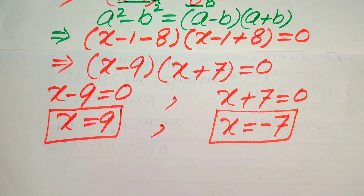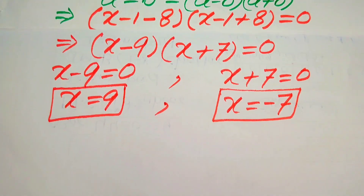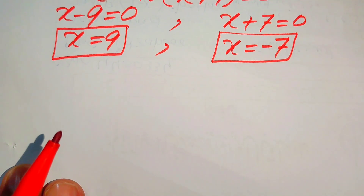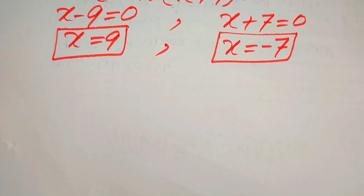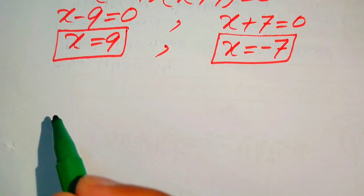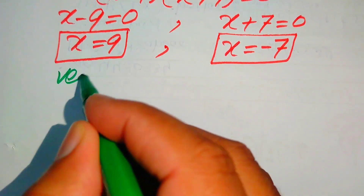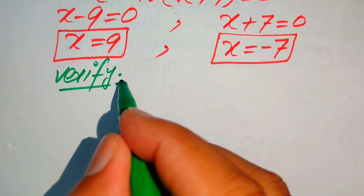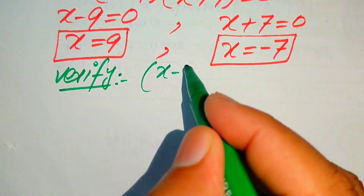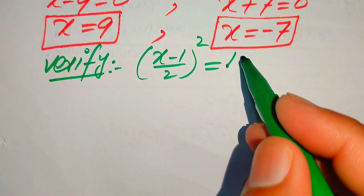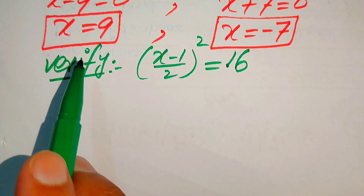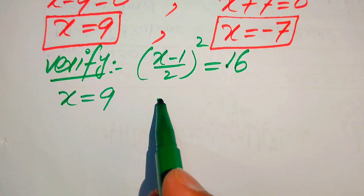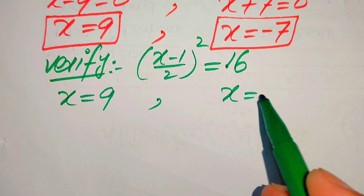Now we need to verify these two roots and separate the solutions from any extraneous roots. We copy down the given equation: (x minus 1 over 2) whole squared equals 16. We substitute both values into the equation and check the behavior.